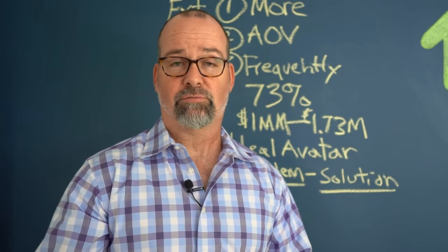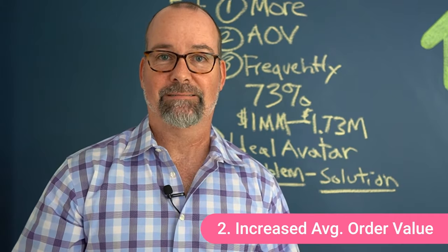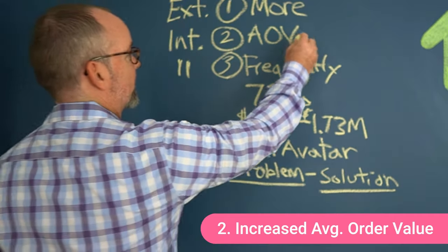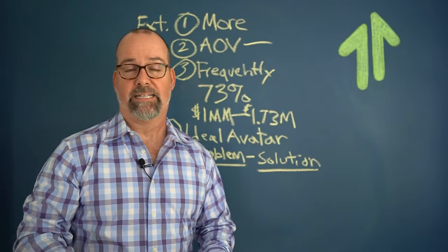So the second way in which you can grow your business is through buying more when they actually come to your site. And that is increasing their average order value. So how do you do this?